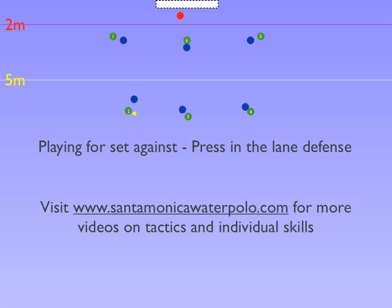All defenders must reposition themselves after each pass to better deny the next pass. If, like in this example, the X1 defender does not adjust his body position to deny the pass, with a quick pass to 1, the set defender will be caught out of position.